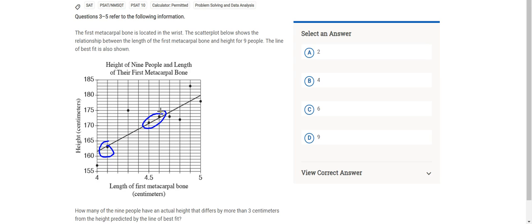And so what they're asking in this question is, how many of the nine people have an actual height that differs by more than three centimeters? Now that doesn't mean they have to be bigger. Okay, because some kids are going to look at that and say, oh, more than three centimeters. Well, that's one and two, because those are more than three centimeters above the line.